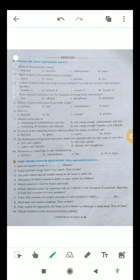Question number four, which mineral is necessary for the formation of strong bones and muscles? The options are iron, calcium, phosphorus, and potassium. The correct answer is B, that is calcium.